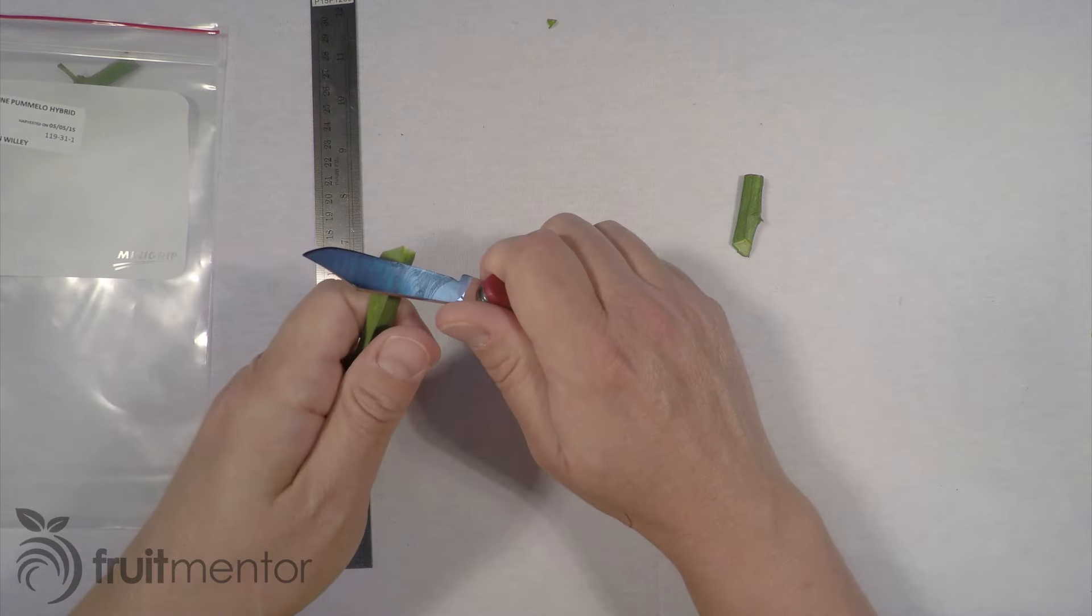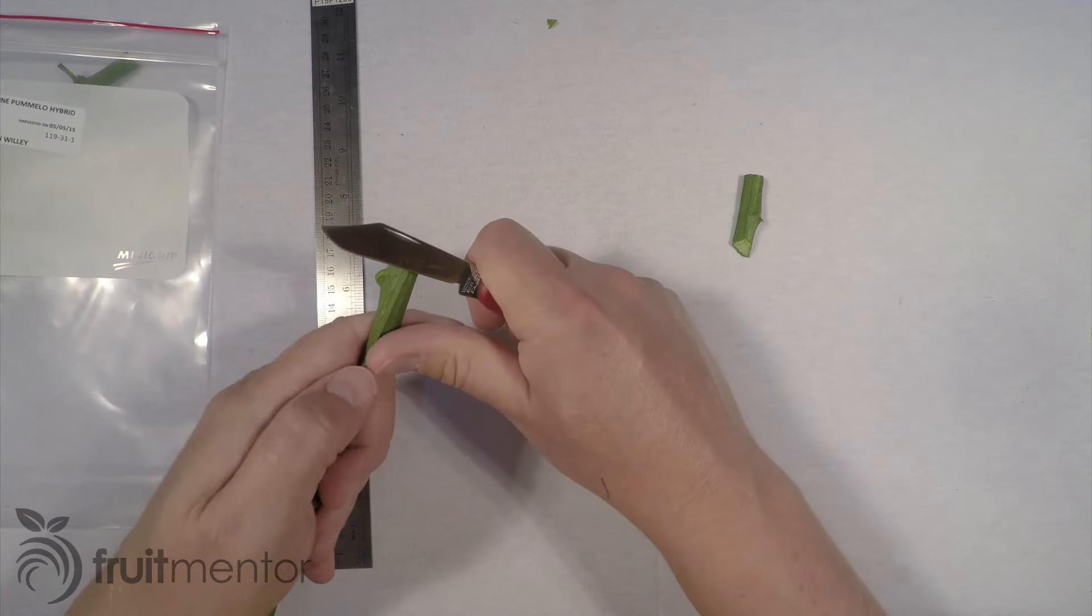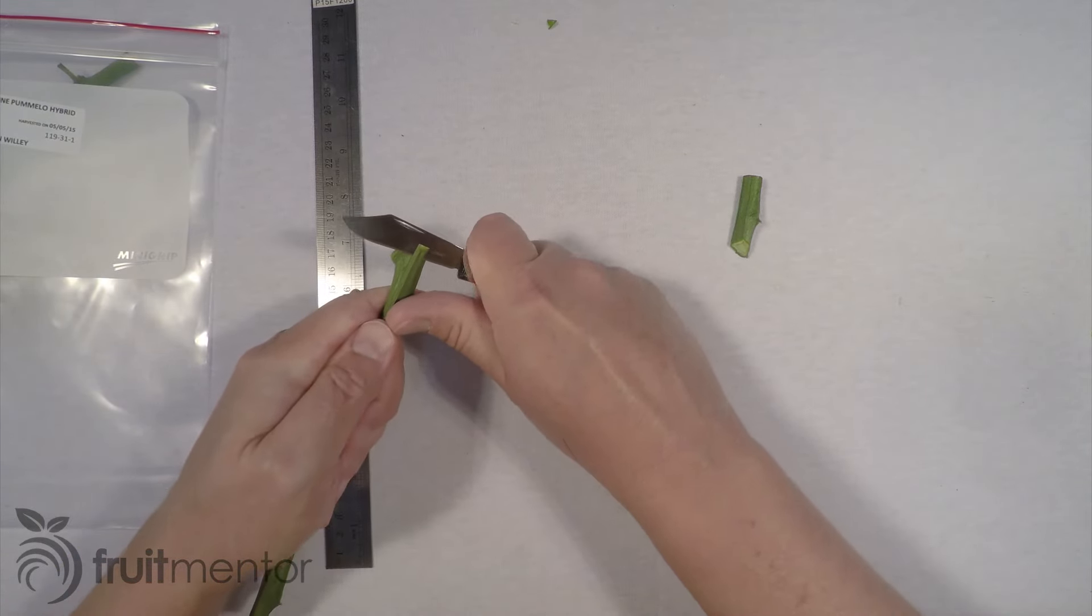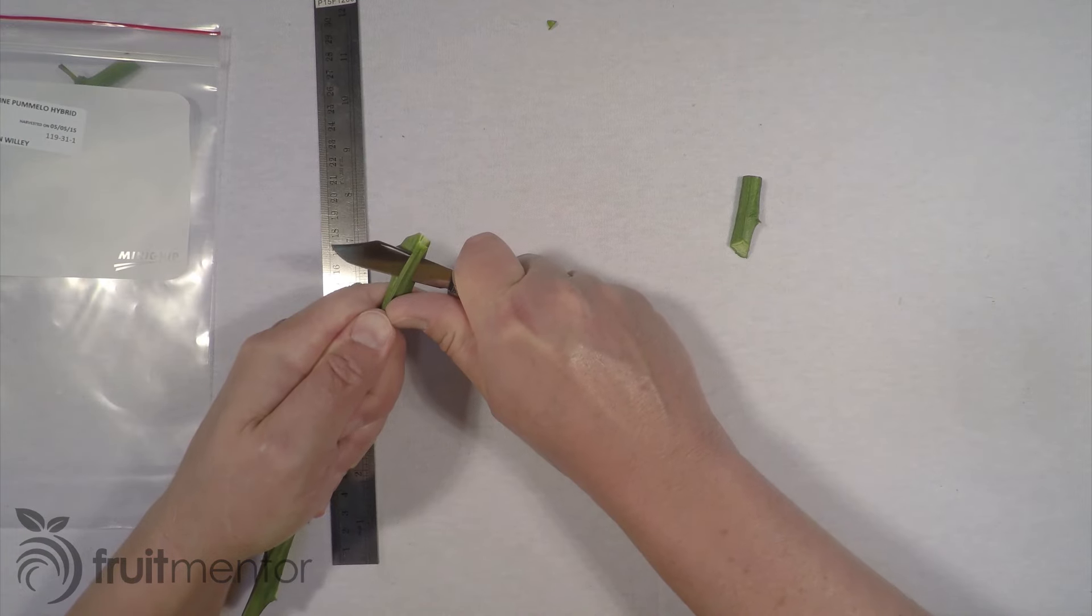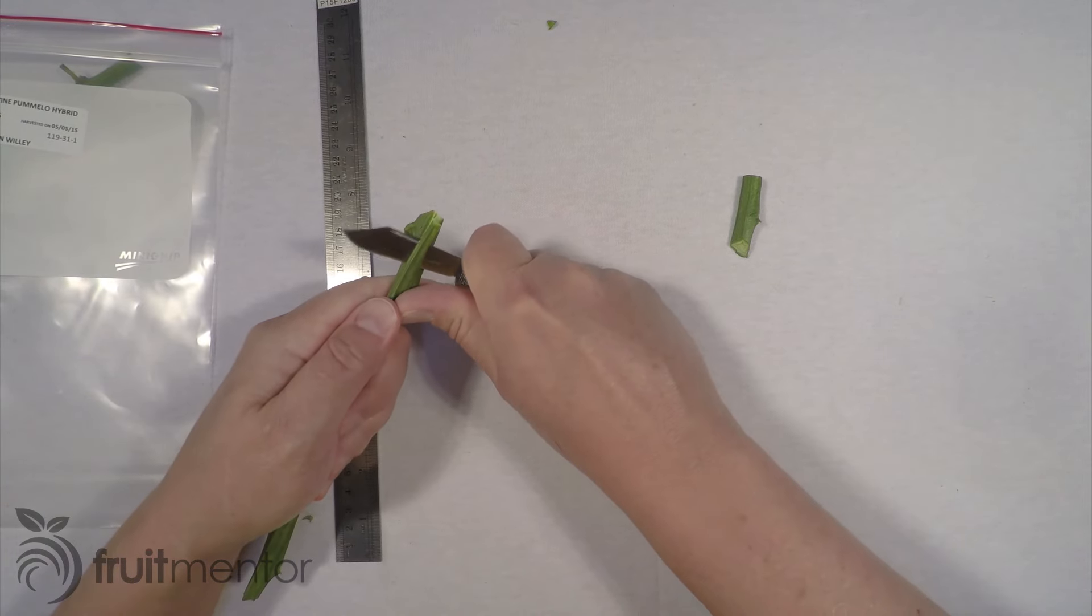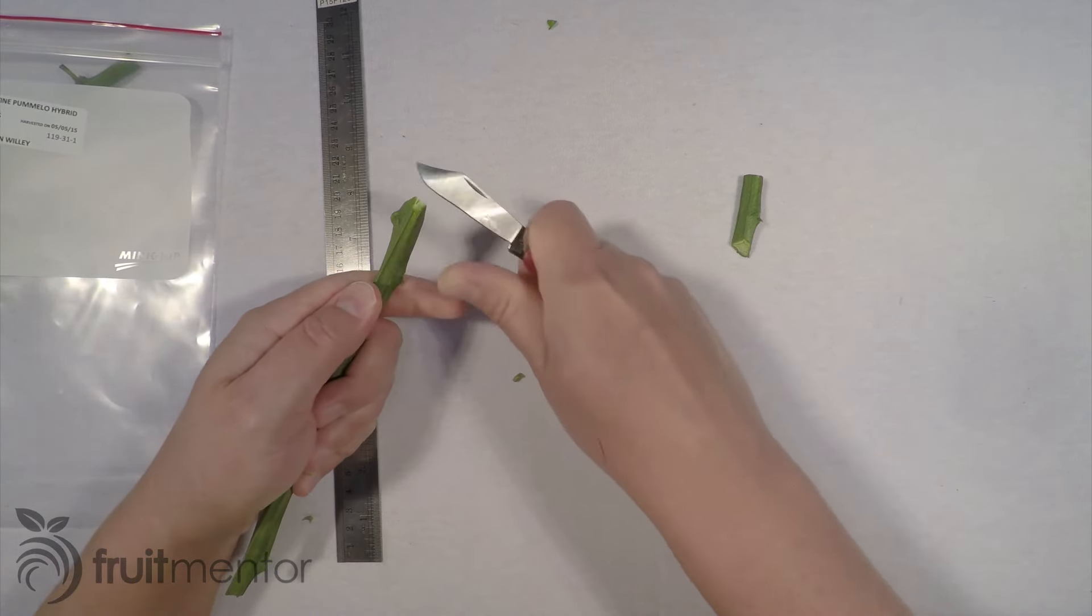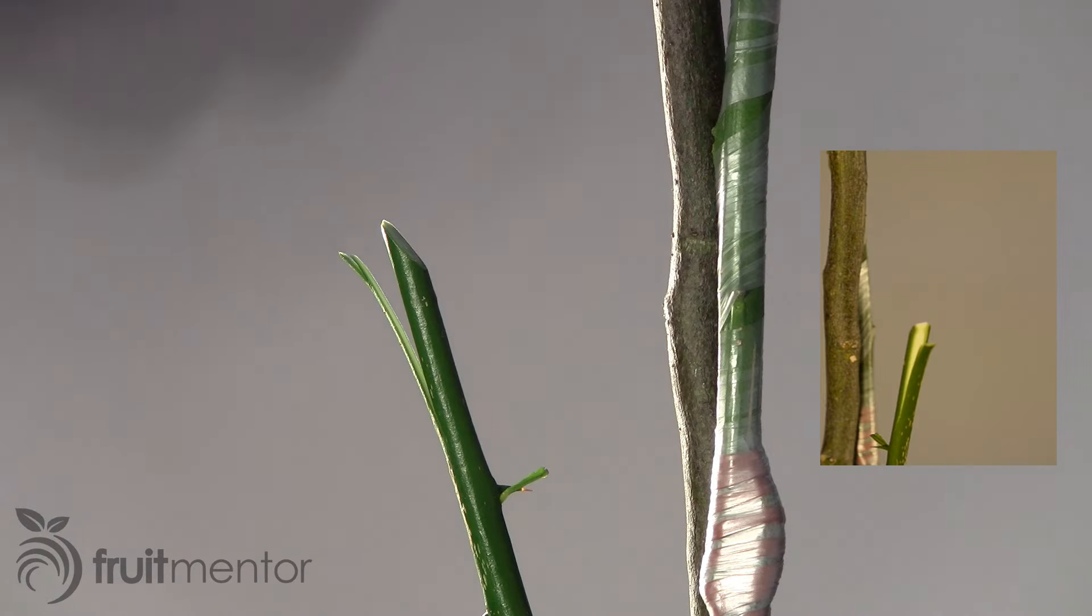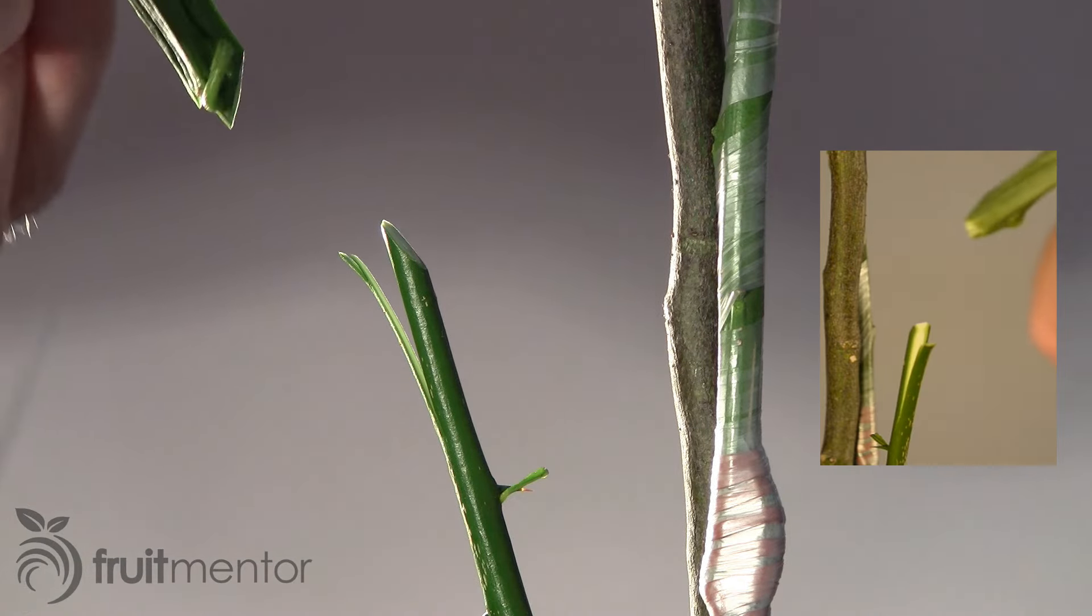In California where I live, we now have both exotic diseases that kill citrus trees and also the insects that spread the diseases. The situation is so severe that it is now against the law in California to graft with backyard citrus cuttings.